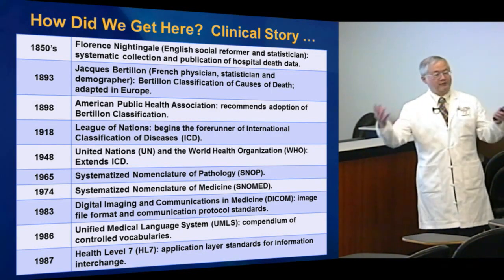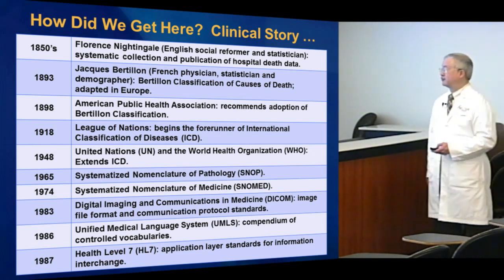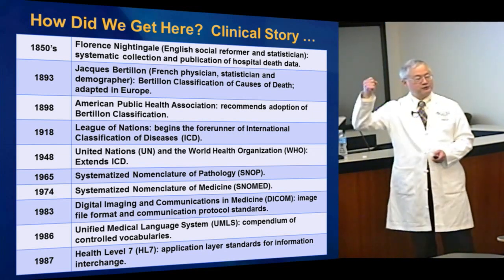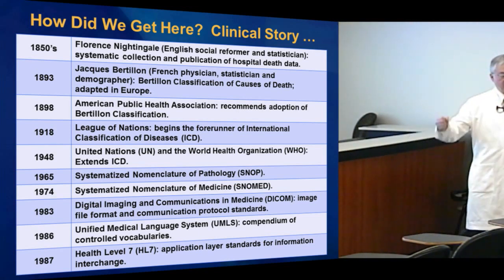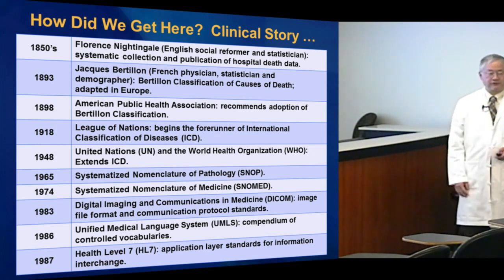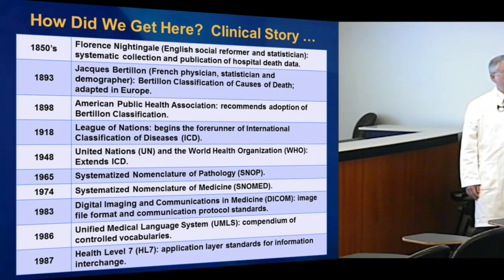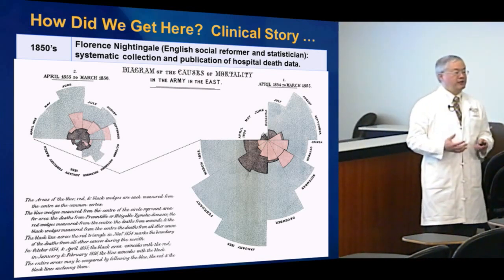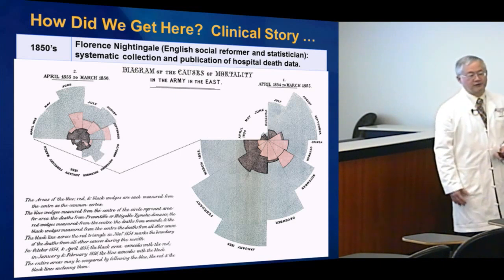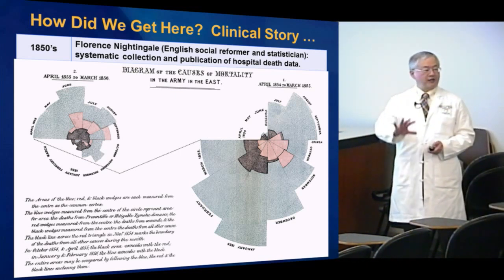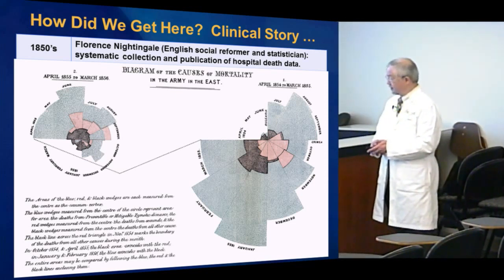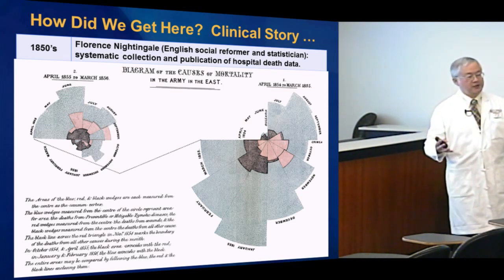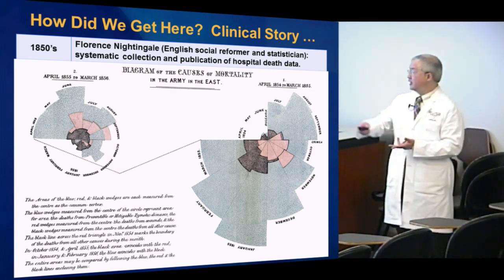How did we get here? The story about data is an old one. In the 1850s, Florence Nightingale — not really known as a nurse per se, but as a social reformer who backed her recommendations with statistics — was really credited as the first to think about big data. One key aspect of big data is that to assimilate it, you have to visualize and understand it. She came up with the polar area plot, which allows you to explain multiple dimensions of data in one graphic.